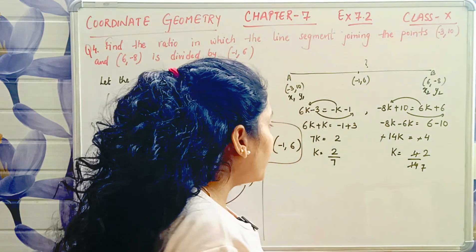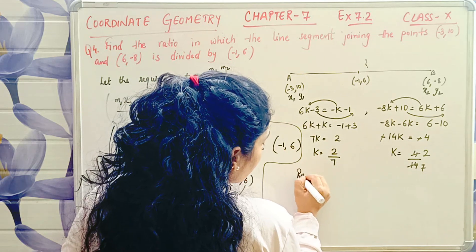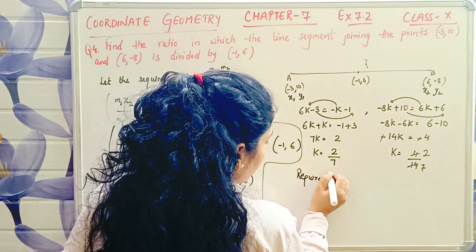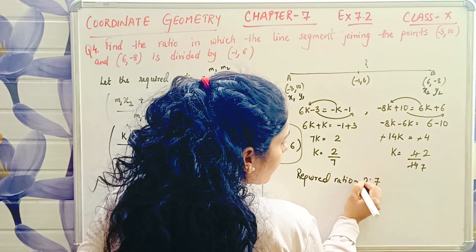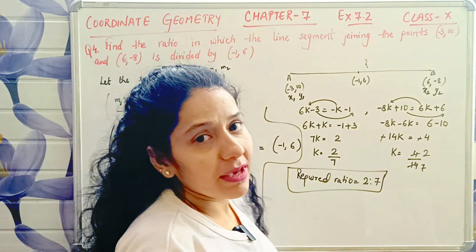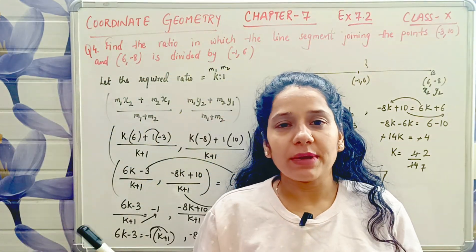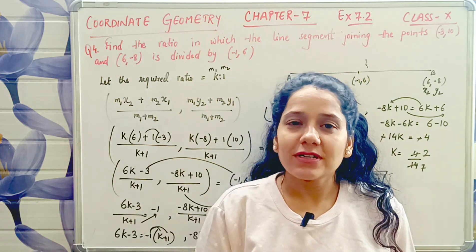You got it. We have to write the required ratio. k will come here, so that means the required ratio, and even if k is not there, you know denominator has 1, so the required ratio you get is 2 is to 7. So the ratio asked in the question is 2 is to 7.